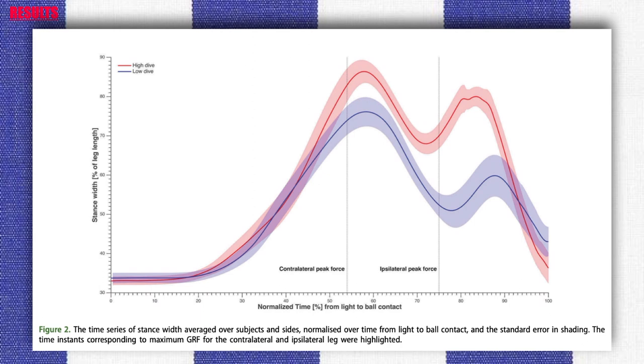After the light signal, the goalkeepers stepped sideways with their ipsilateral leg to increase the stance width from 33±1% to maximum values of 88±8% and 77±11% for high and low dives respectively.